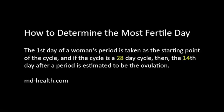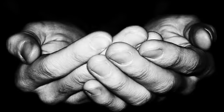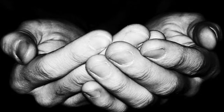What's more is that the day of ovulation can be found on the human hands as well. According to MDHealth.com, how to determine the most fertile day: the first day of a woman's period is taken as the starting point of the cycle, and if the cycle is a 28-day cycle, then the 14th day after a period is estimated to be the ovulation. This means that the egg drops in a woman's reproductive period right between the number of digits of one's hands — 14 for the left and 14 for the right — and on the 14th day, the egg drops.